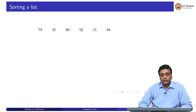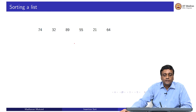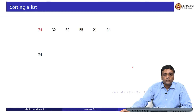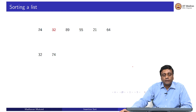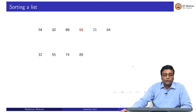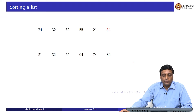Let us do insertion sort from left to right. I start building up the new list from the left. I pick up 74 and create a new list. When I pick up 32, because 32 is smaller than 74, it has to go to the left, so 74 gets pushed. 89 when picked up next is bigger than everything, so it goes to the top and nothing gets disturbed. For 55, I have to move it down and push it into the correct place. 21 goes all the way to the bottom and pushes everything to the right. And 64 goes in the middle and pushes two elements to the right.